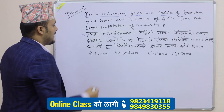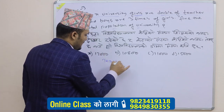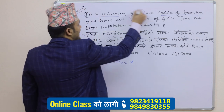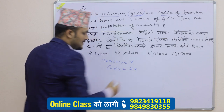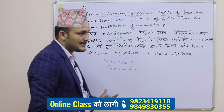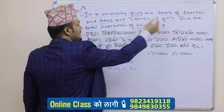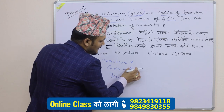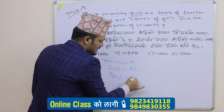Now, in this question, I have a format. Let teacher equal x. Girls are double the teacher, so girls are two x. Boys are three times the girls — girls are two x — so boys are six x.